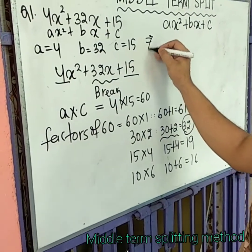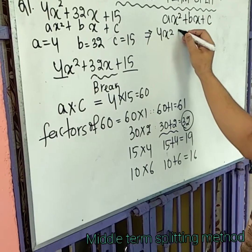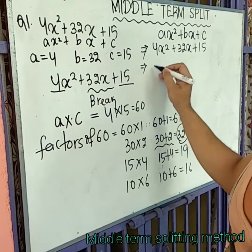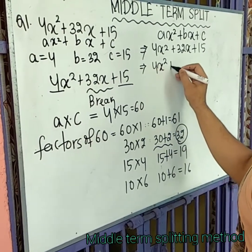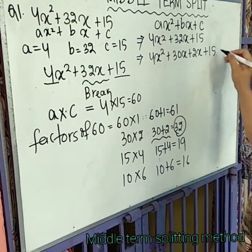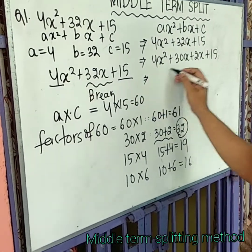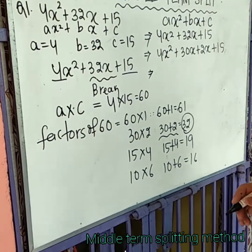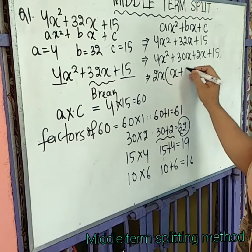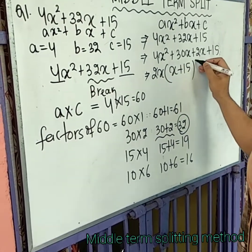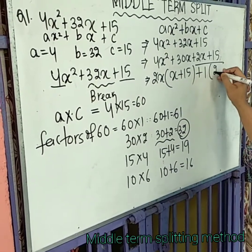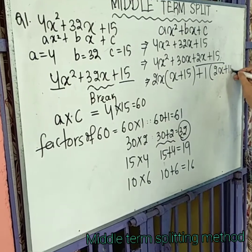4x² plus 32x plus 15 and the middle term is split as 30x plus 2x plus 15. Here you can take 2x common from first two terms getting 2x times (2x plus 15) and here you can take 1 common and then we get 1 times (2x plus 15).